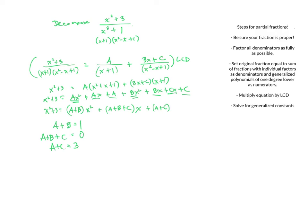To help, I'll use the substitution trick alongside this system. Going back to the equation after multiplying by the LCD and letting x equal negative 1: the left side gives 4; the A term evaluates to A times 1; and the Bx plus C term becomes zero because x plus 1 equals zero. So both B and C disappear, giving A equals 4.